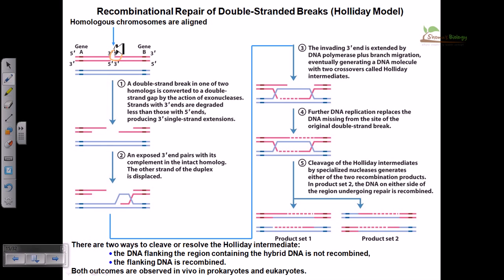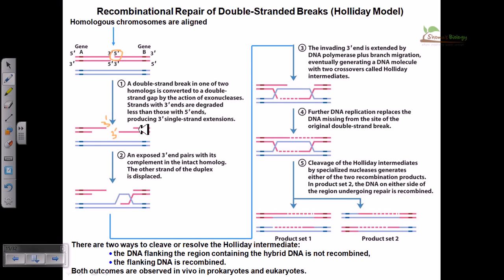Now here, this is the five prime. You must degrade the nucleotide sequences in a higher amount from the five prime end and a lower amount from the three prime end. As a result, our actual goal is to produce a three prime overhang in both strands — three prime single-stranded extensions.